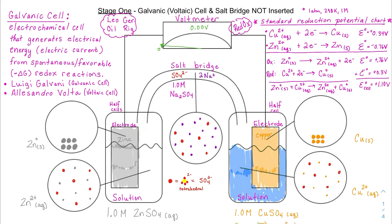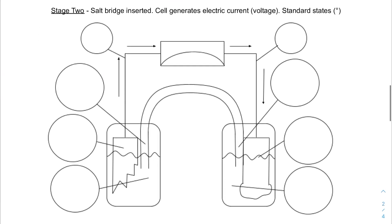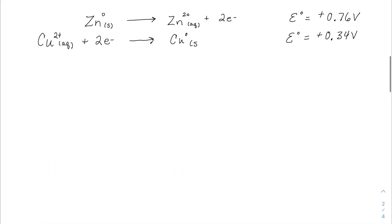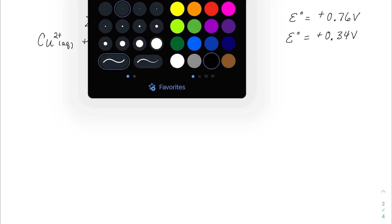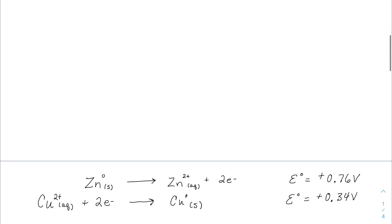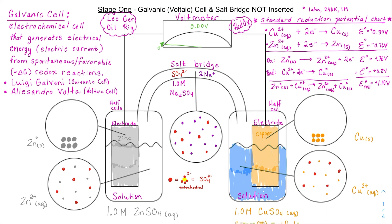I hope that helped you set up your galvanic cell and understand how it gets started. In the next video, I'll go over what happens when we insert the salt bridge and what we'd draw in the particulate view. The upper half of your flip book should be blank for you to fill in during that next video. Good luck, chemists!